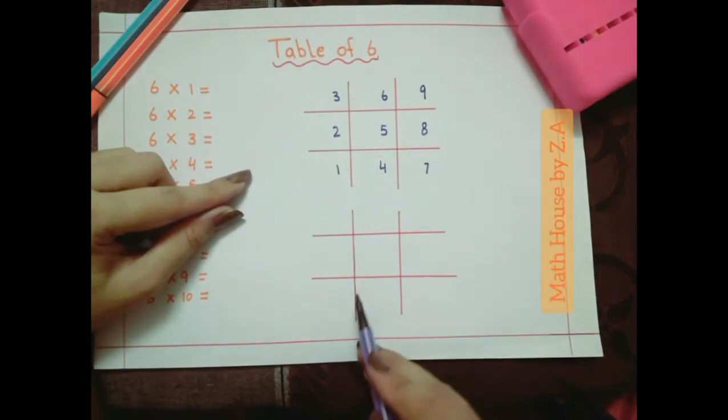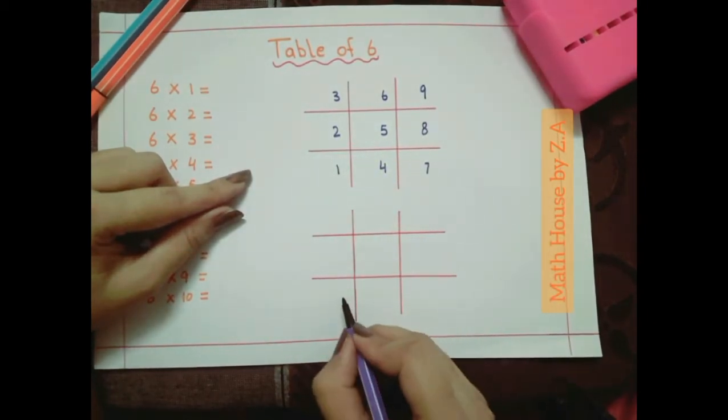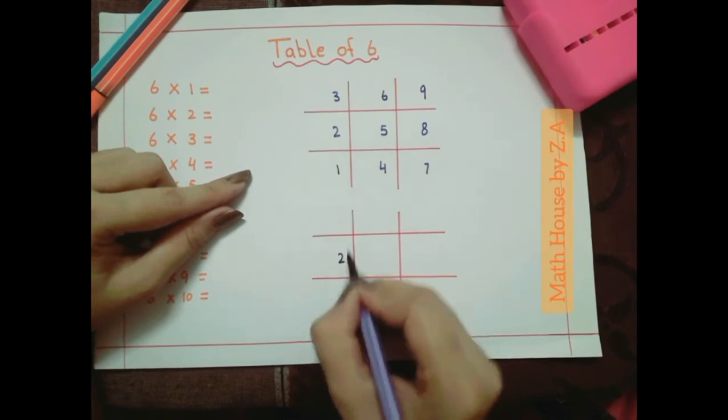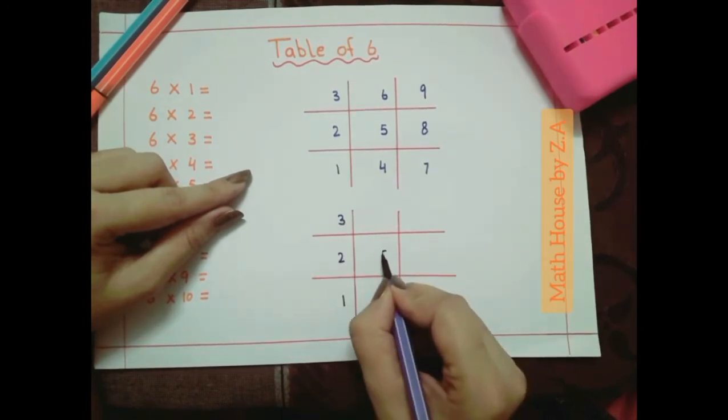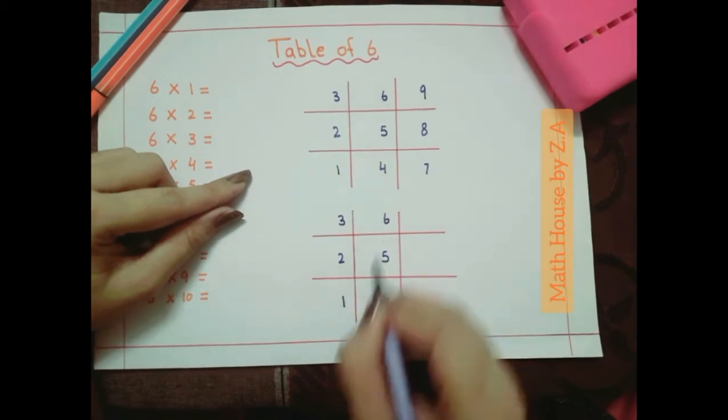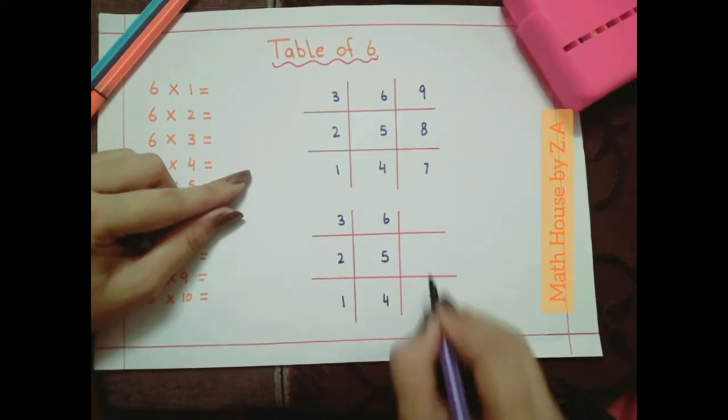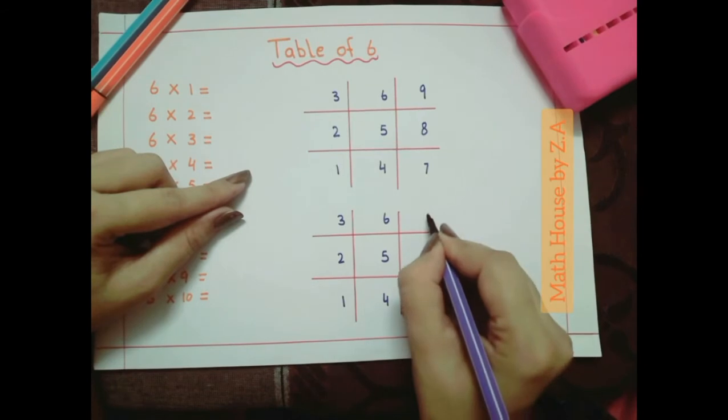Now repeat the same numbers and pattern in the second grid. Write 1, 2, 3, 4, 5, 6 then 7, 8 and 9.